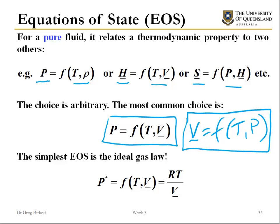The simplest equation of state is the ideal gas law. The pressure of an ideal gas is equal to a function of temperature and volume, embodied in our familiar RT/V, or PV = RT. As we discussed, ideal gases are good in some situations but they can't account for intermolecular interactions, so we need equations of state that can account for the fact that molecules interact.